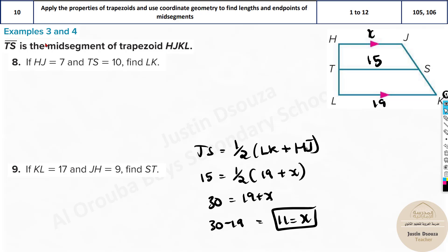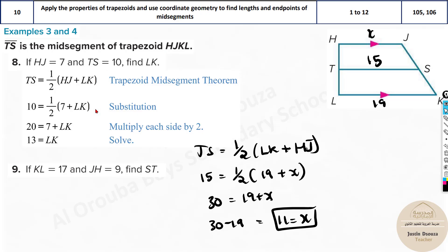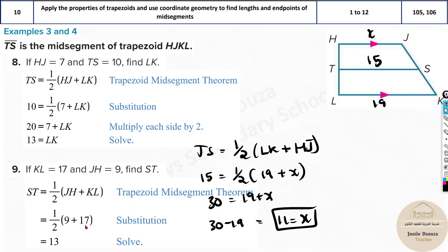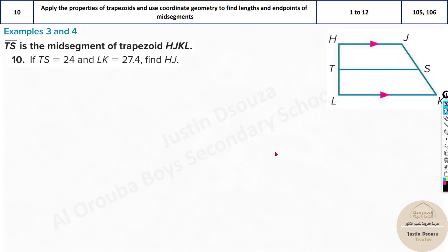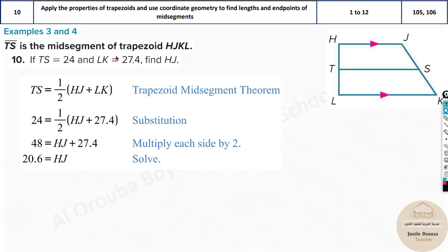Please solve these problems by yourselves — they are similar problems with different unknowns. Over here HJ is given and TS is given, so you have to find LK. Here, KL and JH are given and you find ST using the mid-segment formula. Again, it's very straightforward.